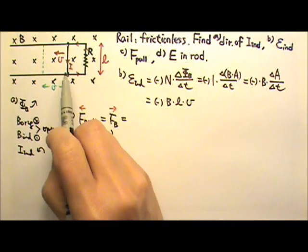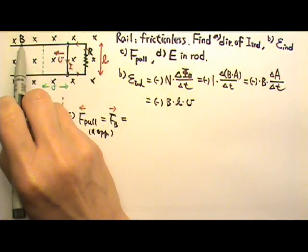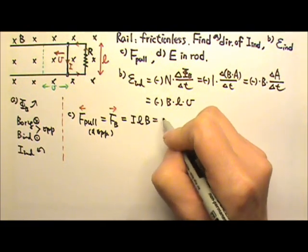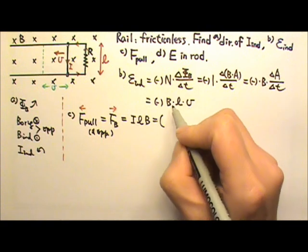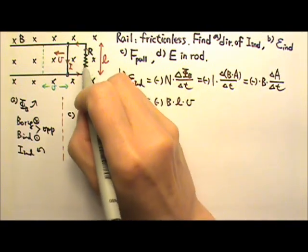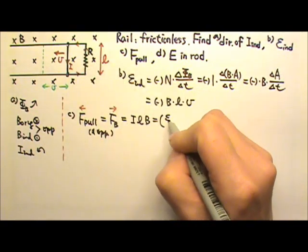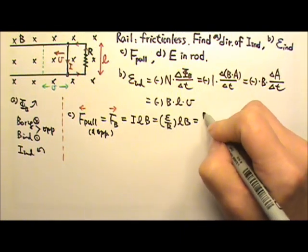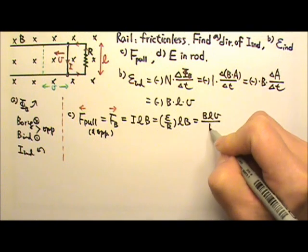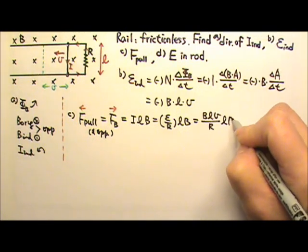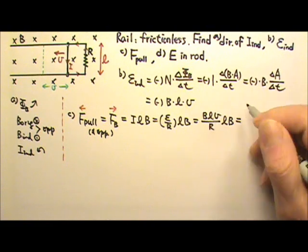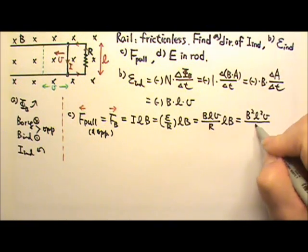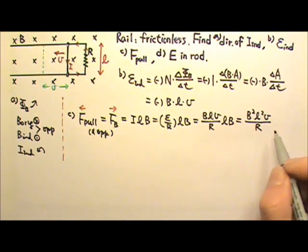This force comes from the current being inside the magnetic field, so the force is ILB. The current in the loop is the EMF divided by the resistance R. And the EMF is BLV. So this is the pulling force. So I can just simplify this. I'll get B squared L squared V over resistance. And that's the pulling force.